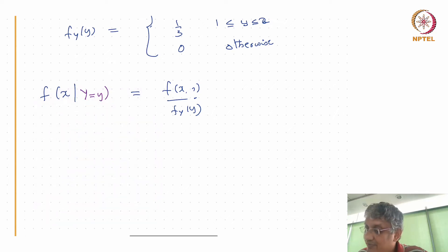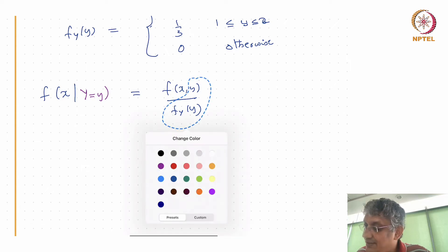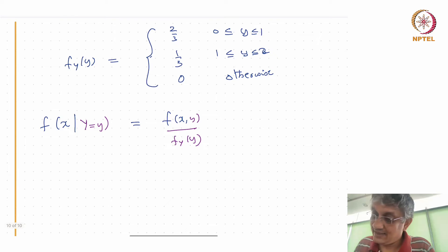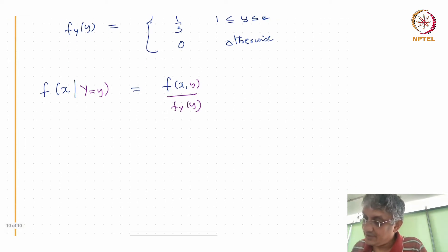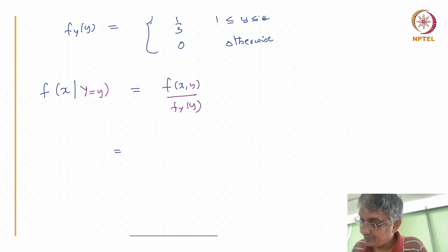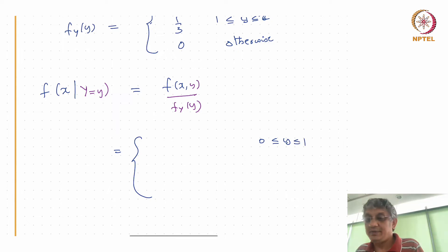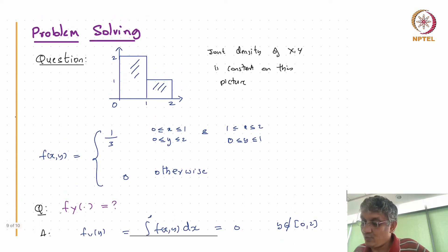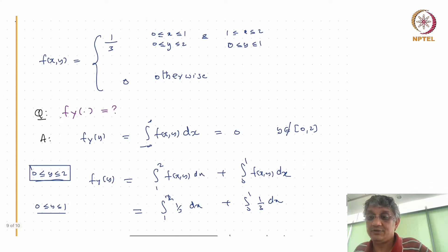We have to be careful about where y lies. Let's first do the case when y is between 0 and 1. When y is between 0 and 1, f(x, y) has the value 1/3 for x between 0 and 2. So f_{X|Y}(x|y) = (1/3) / (2/3), for 0 < x < 2.